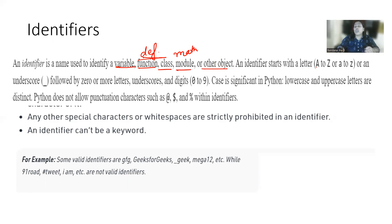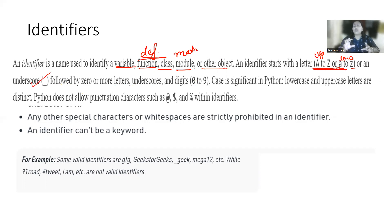An identifier always starts with the alphabet A to Z or small a to small z — uppercase or lowercase, that is the small letters — or the underscore, followed by zero or more letters, underscores, and digits. But the starting should be alphabets. After that, you can apply underscore for giving space between two alphabets. After the alphabet, you can use digits also — just like here we have used 10.